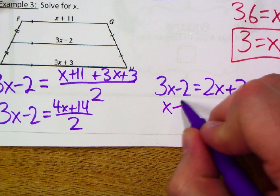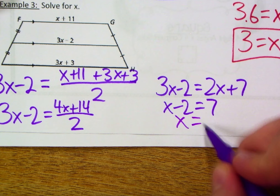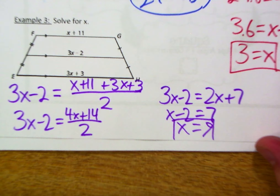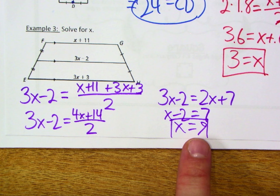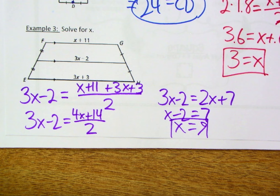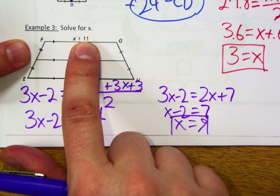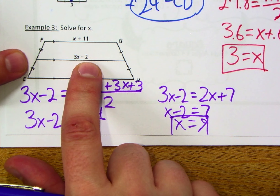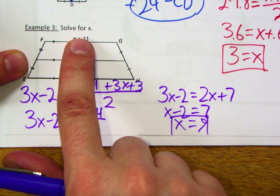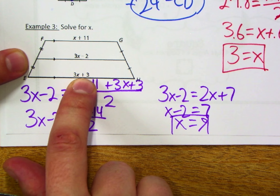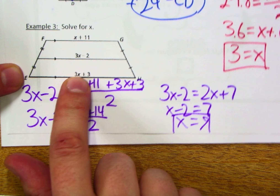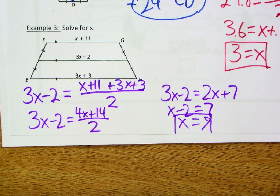Subtract 2x from both sides: x − 2 = 7, then add 2: x = 9. To verify: x + 11 = 20; mid-segment = 3(9) − 2 = 25; the difference is 5, so 25 + 5 = 30 for the other base. Check: 3(9) + 3 = 30. Both values confirm the mid-segment 25 is the average of 20 and 30.